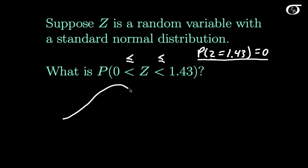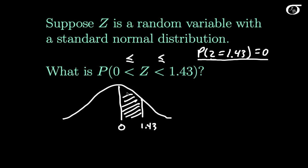First we draw our standard normal curve. Here's 0 in the middle, and out here somewhere is 1.43. The probability that z lies between 0 and 1.43 is simply the area under the curve between those two values. To find that we would integrate the probability density function between 0 and 1.43, but that's not easy to do and requires numerical techniques, so the results have been put in a table.